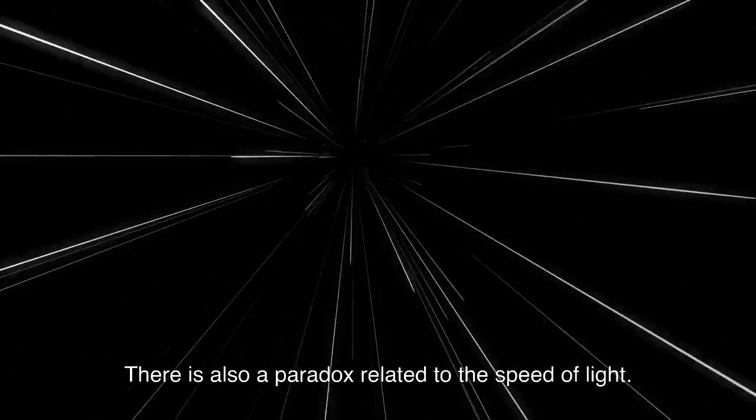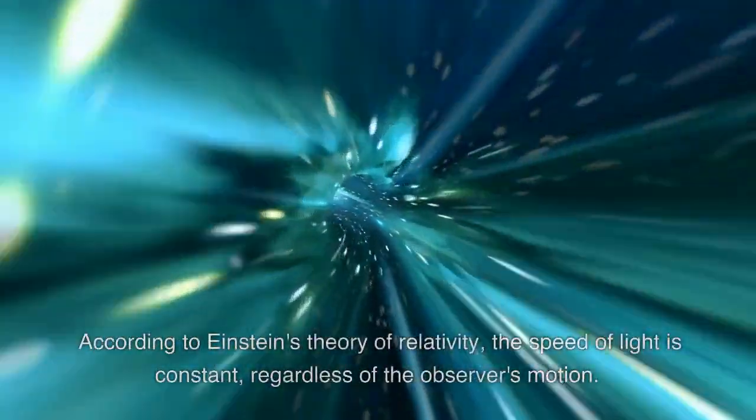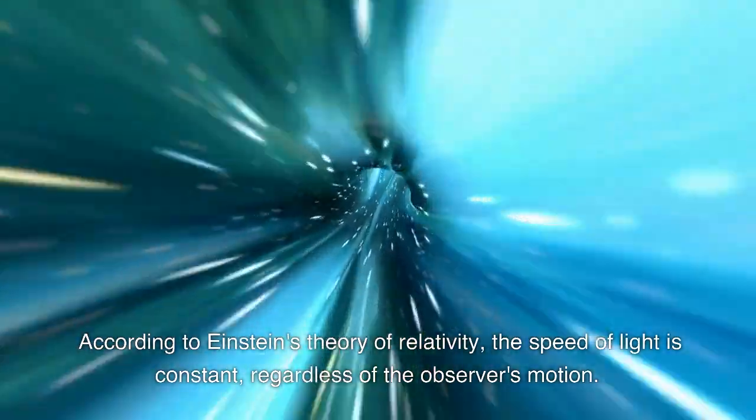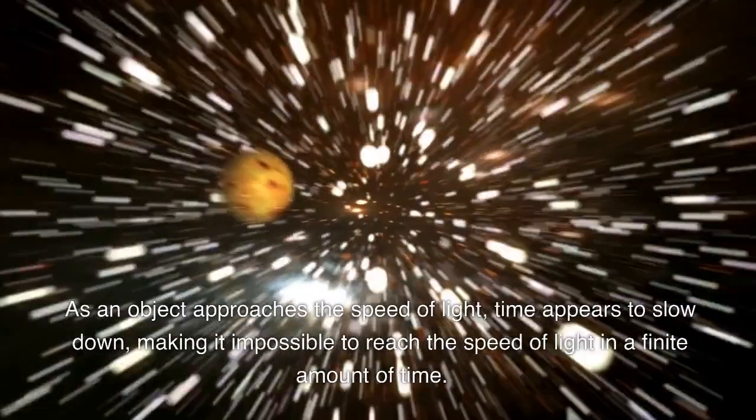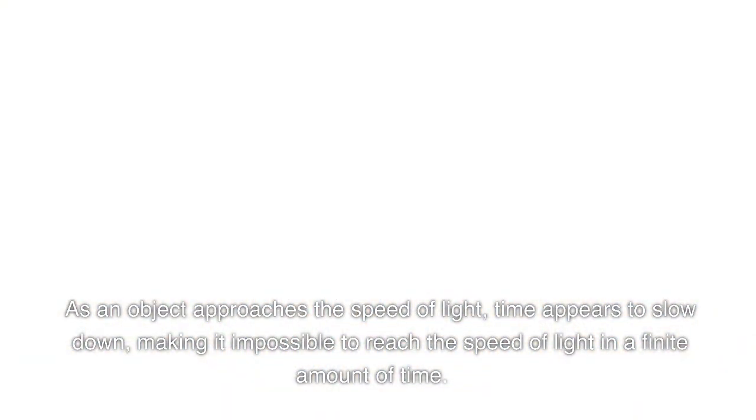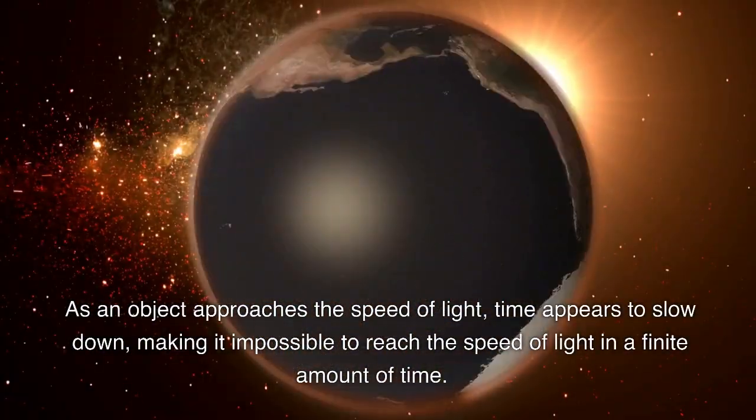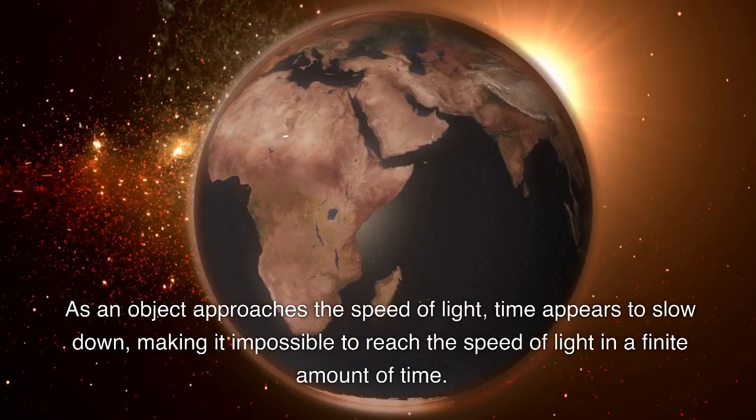There is also a paradox related to the speed of light. According to Einstein's theory of relativity, the speed of light is constant, regardless of the observer's motion. As an object approaches the speed of light, time appears to slow down, making it impossible to reach the speed of light in a finite amount of time.